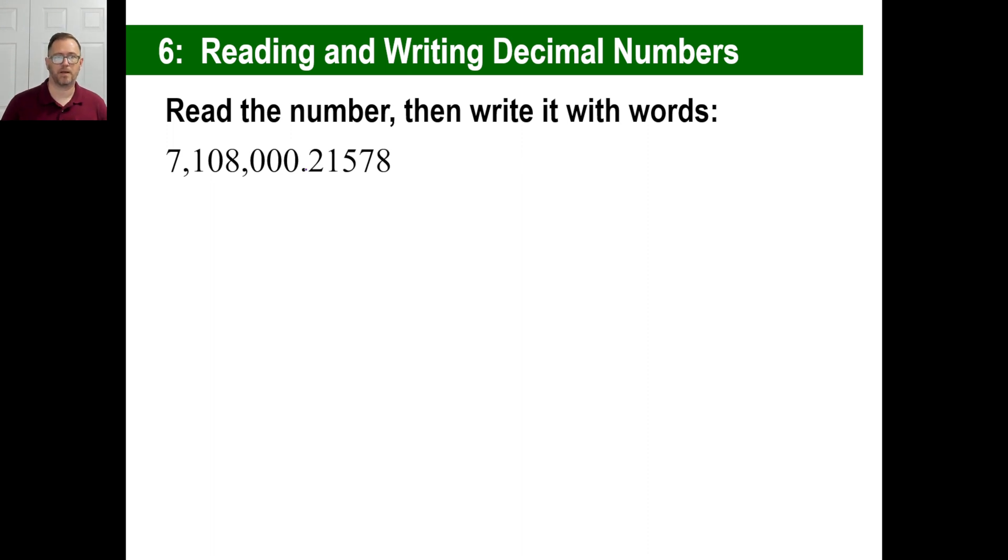Let's write this one. That's going to be 7,108,000 and, so I got tenths, hundredths, thousandths, ten-thousands, hundred-thousandths. So this is going to be and 21,578 hundred-thousandths, like that. There you go.